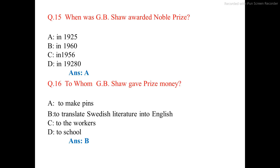Question number 16. To whom did J.B. Shaw give the prize money? The correct answer is option B: to translate Swedish literature into English.